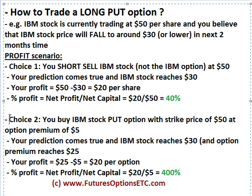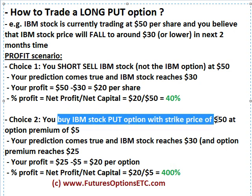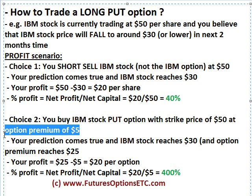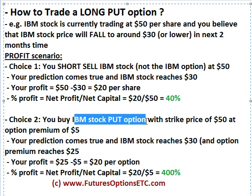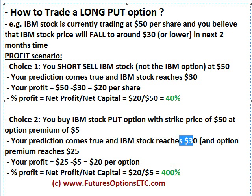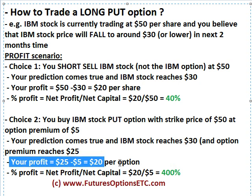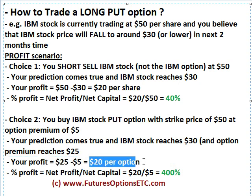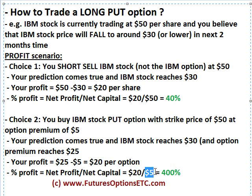The other option is choice 2: you actually buy an IBM stock put option with a strike price of $50 and an option premium of $5. This $5 is the amount you pay to get into this IBM stock put option. Assume your prediction comes true and IBM stock actually reaches $30, so your option premium reaches $25. Your profit then comes to $25 minus $5, that's $20 per option. In terms of percentage, net profit divided by net capital is $20 divided by $5 — you are making a 400% profit.